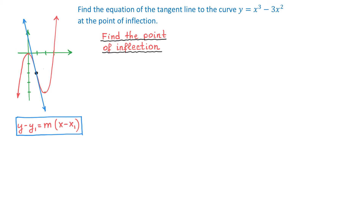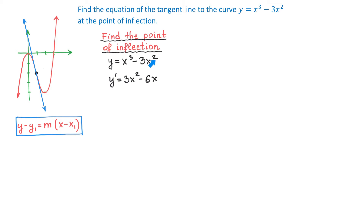To find the second derivative, first we write down the function y equals x cubed minus 3x squared. Then we find the first derivative: y prime equals 3x squared minus 6x. We do this by moving each exponent in front and then decreasing each exponent by 1. Next, we find the second derivative, which is y double prime equals 6x minus 6.